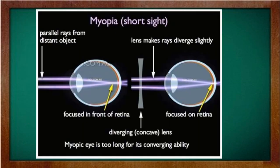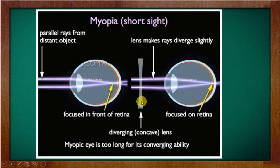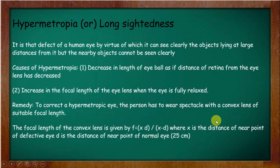In myopia, parallel rays of light focus in front of the retina rather than on it. We use a concave lens of proper focal length which will shift the focus correctly onto the retina, correcting the defect.